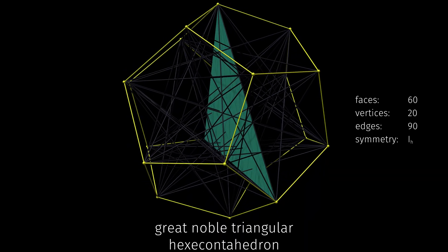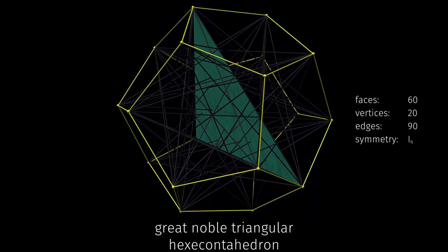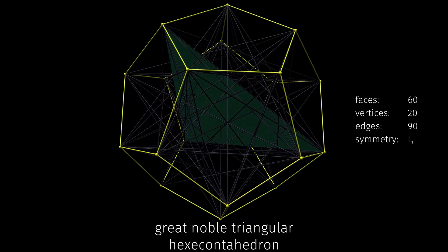And finally, because taking a dual swaps faces and vertices, the dual of a noble polyhedron is always noble itself.